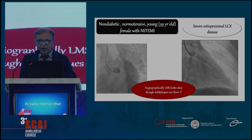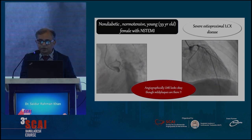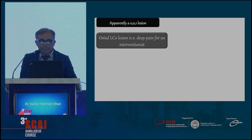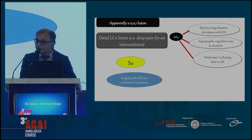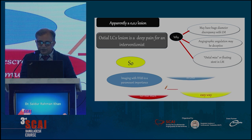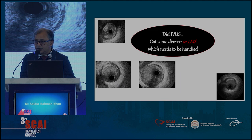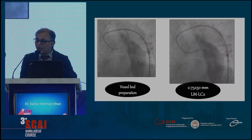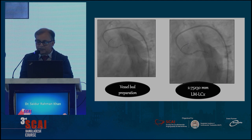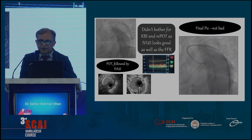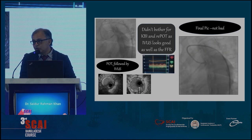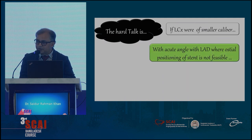What about the most controversial 0-0-1 lesion in bifurcation? In this case, a non-diabetic 40-year-old patient with severe ostio-proximal LCX disease — apparently a 0-0-1 lesion, but still a deep pain for the interventionist. There is huge diameter discrepancy between the LCX and the left main. We performed IVUS, which showed some parity between the left main and LCX diameters, and were able to go for a direct inverted provisional technique from left main to LCX stenting. FFR in the LAD was normal, so we did not need side branch opening.